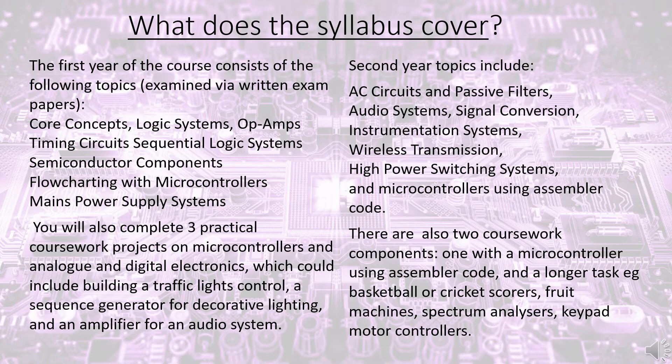Each of the components, circuits and systems we look at can be analysed in one of four ways. Firstly, as a circuit symbol or diagram. Secondly, by a graph showing output plotted against input — we call that a characteristic. Thirdly, using a mathematical formula or formulae. And fourthly, by a verbal description using technical terms.